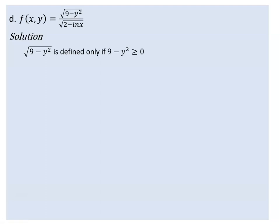In the domain, we have the numerator 9 minus y squared. For the square root to be defined, 9 minus y squared must be greater than or equal to zero. This gives us a positive value, meaning y is between minus 3 and 3.